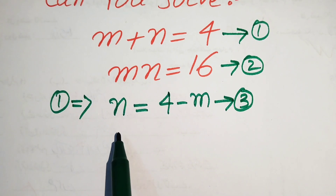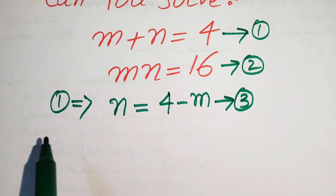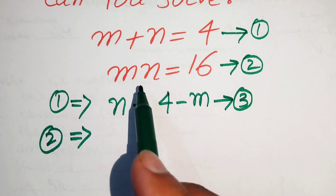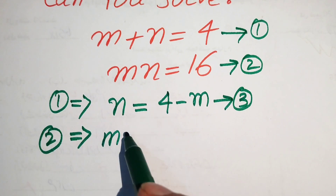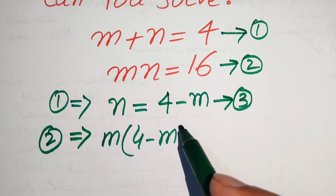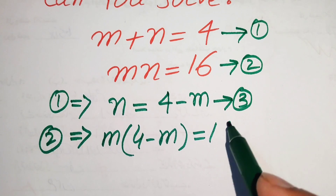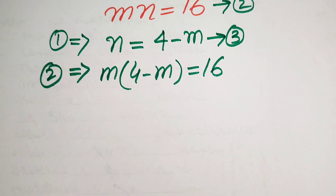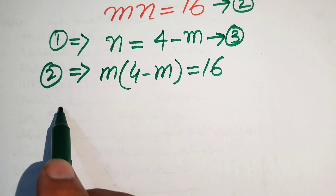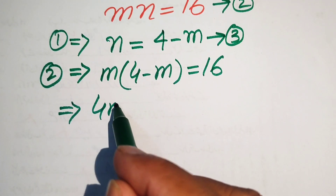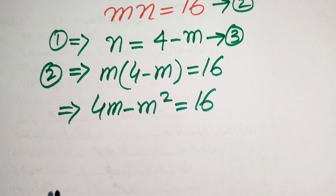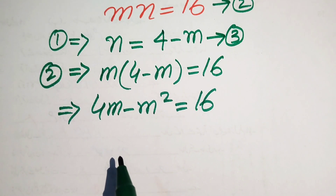We substitute the value of n into equation number two. Equation two gives us m times n, so we put n equals 4 minus m, giving m times (4 minus m) equals 16. Multiplying out, we get 4m minus m squared equals 16.